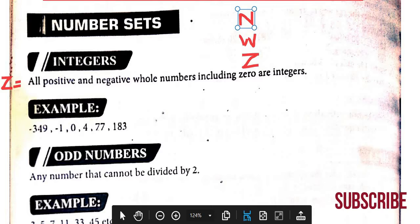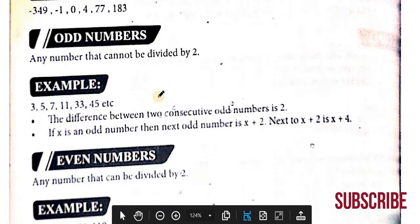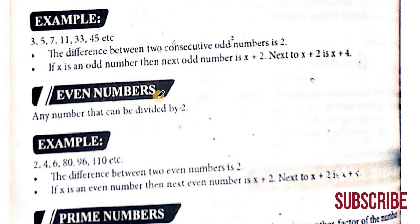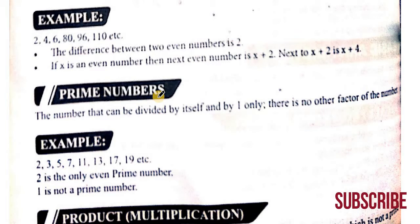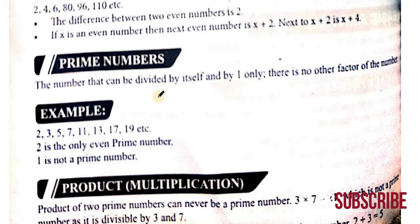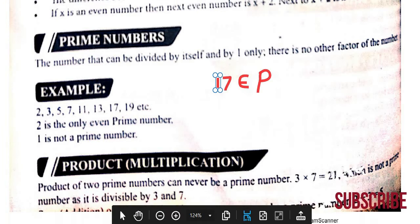Similarly, there are odd numbers. Any number that cannot be divided by 2 is an odd number. Even numbers are numbers which can be divided by 2. After odd and even numbers, we will discuss prime numbers. Prime numbers are numbers which are divided by itself. For example, 17 is a prime number. We will show 17 belongs to P, the set of prime numbers.